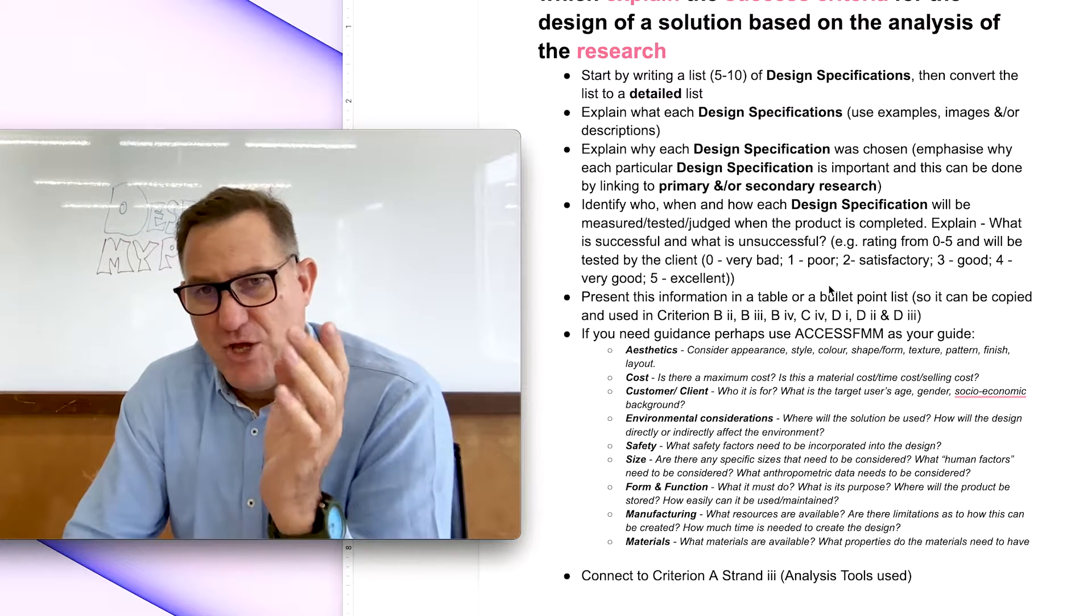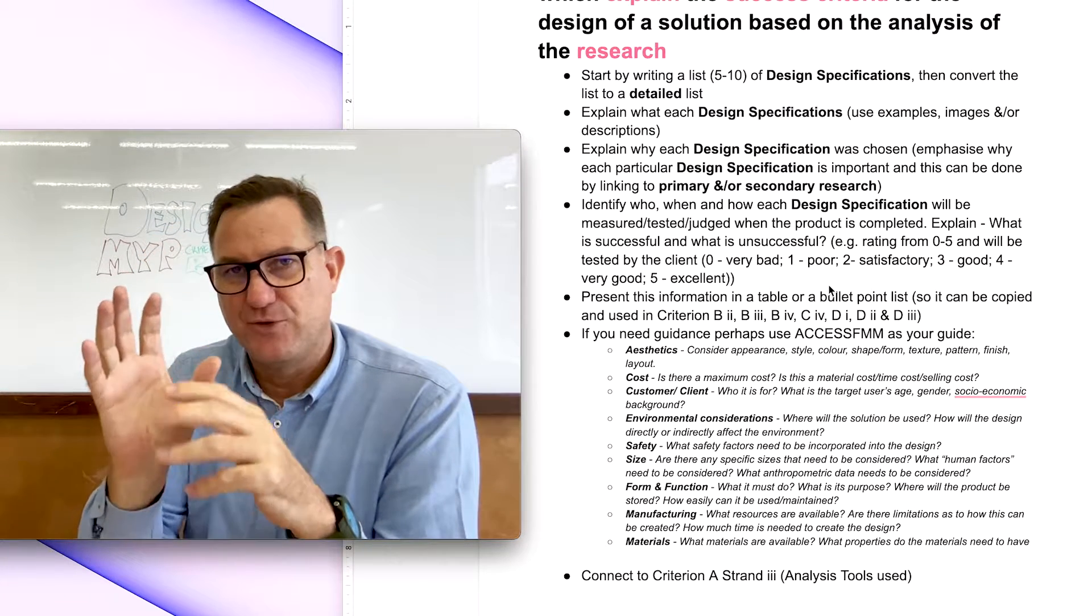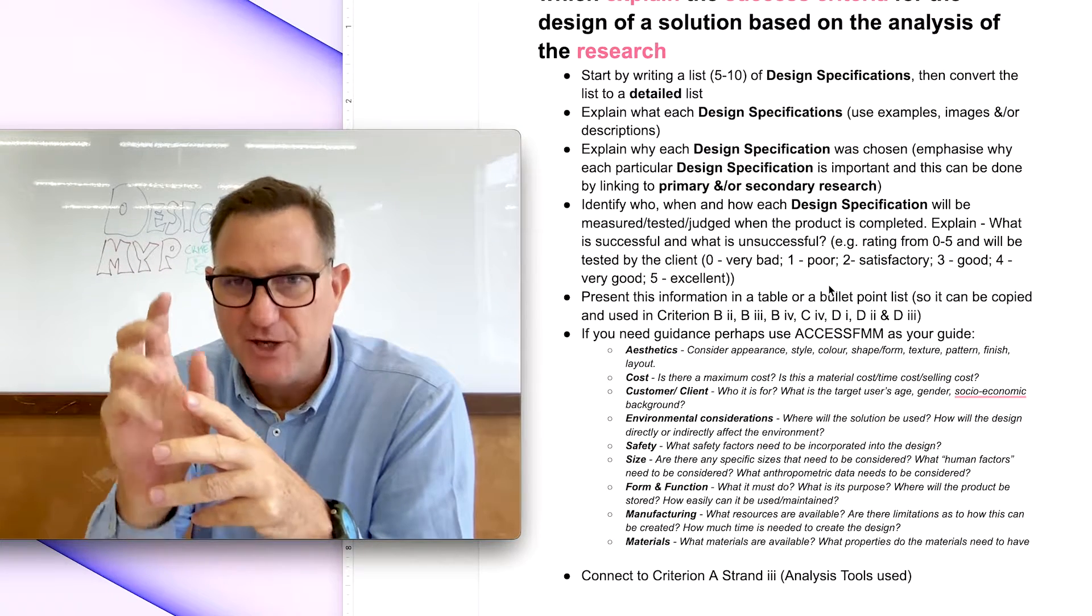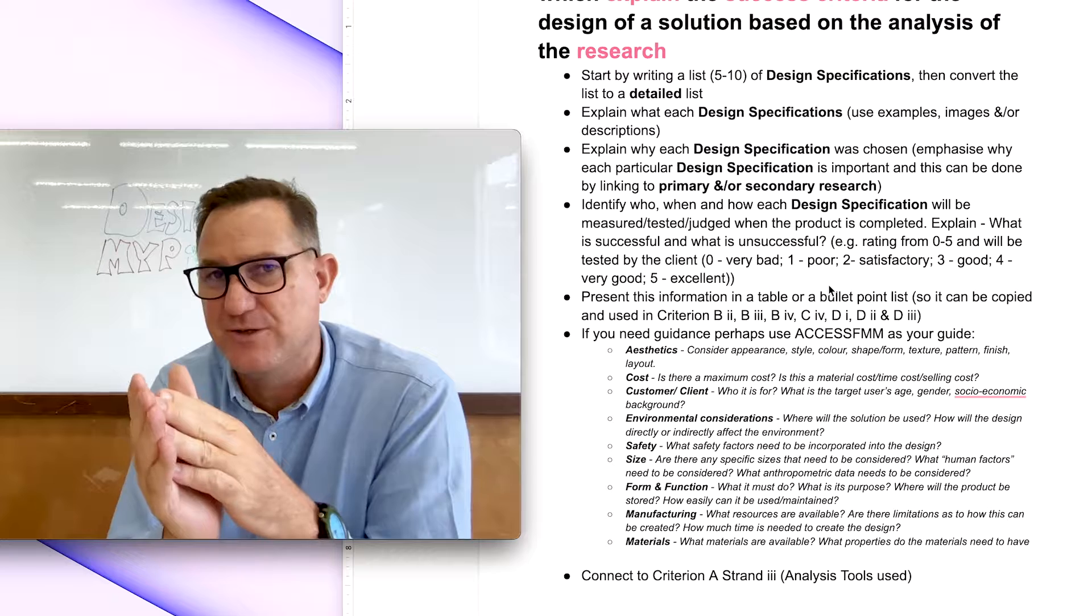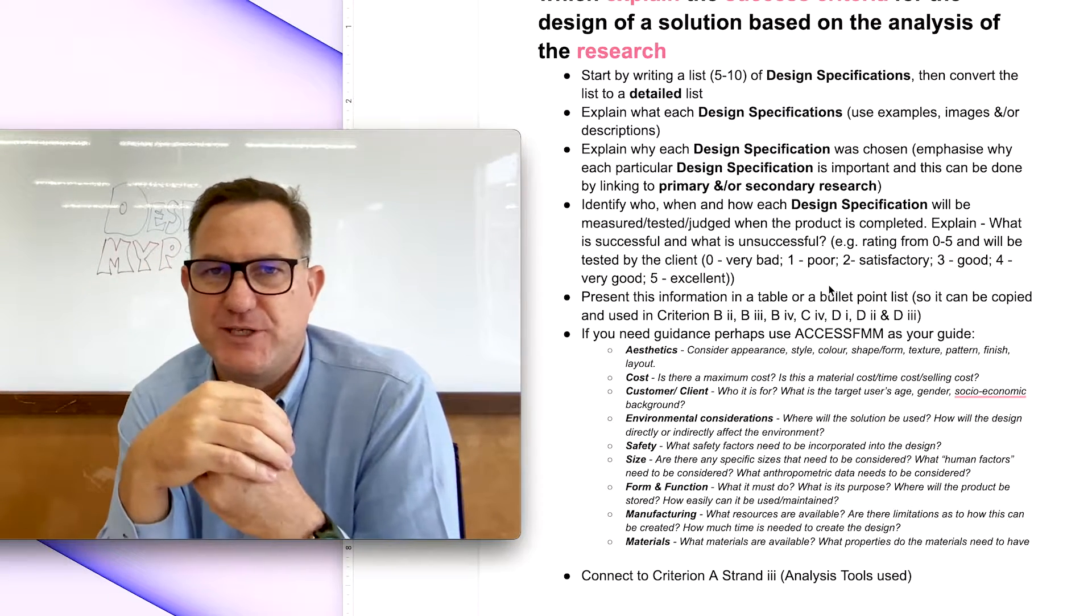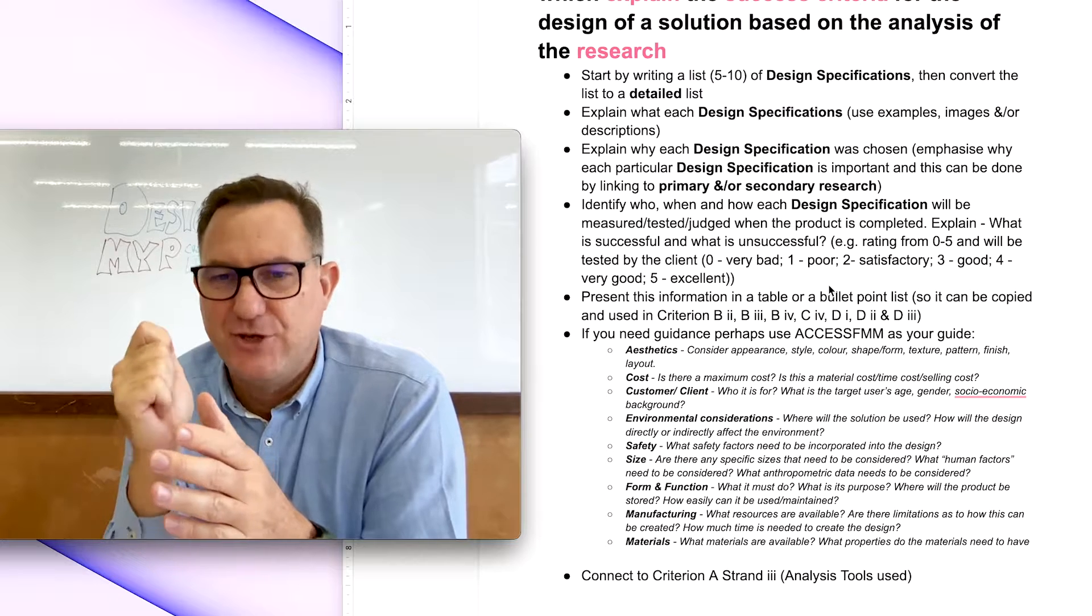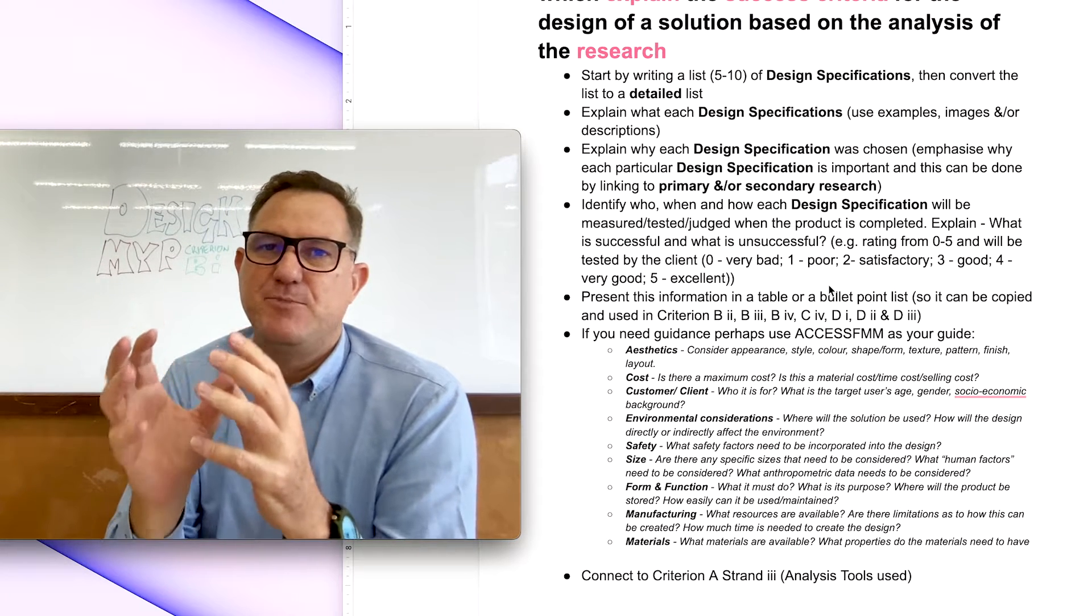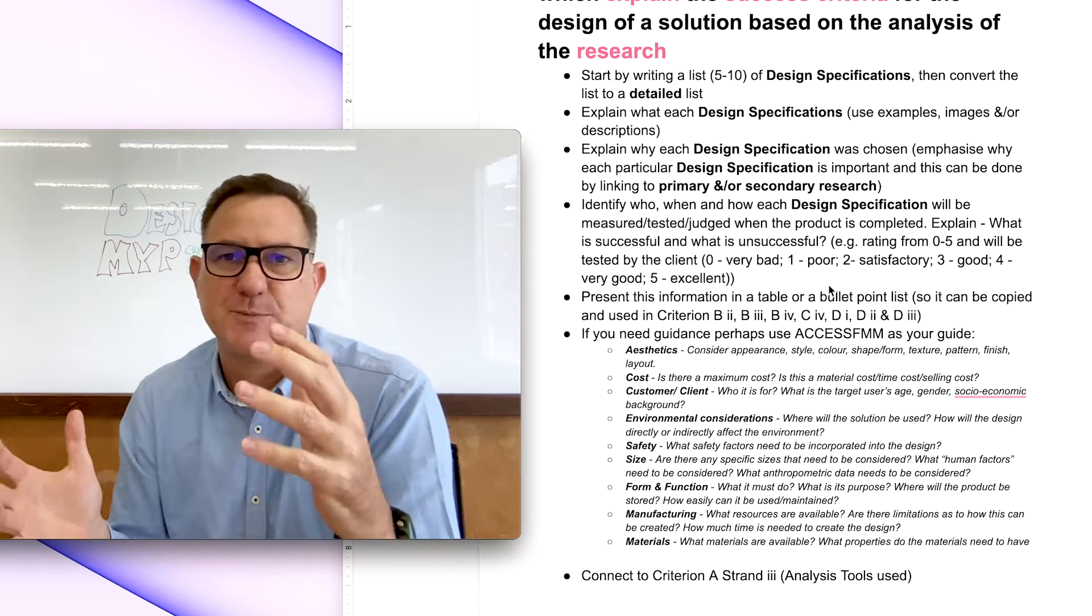So you've got your design specifications. Now the idea is that if you can make yourself a nice list or a table, because your design specifications, you're going to use them again and again and again. Because for Criterion B, you can reuse the design specifications, not all the details, but mainly the specifications, in Strand 2, in Strand 3, and Strand 4 of Criterion B. You can also use them in Criterion C, Strand 4, and you're definitely going to use them when you do Criterion D, Strand 1, 2, and 3. So keep this in mind.